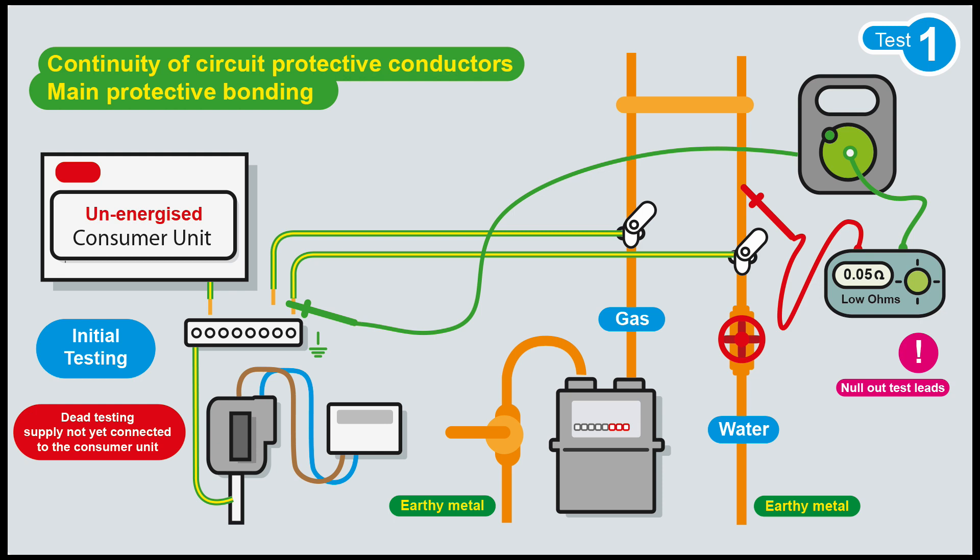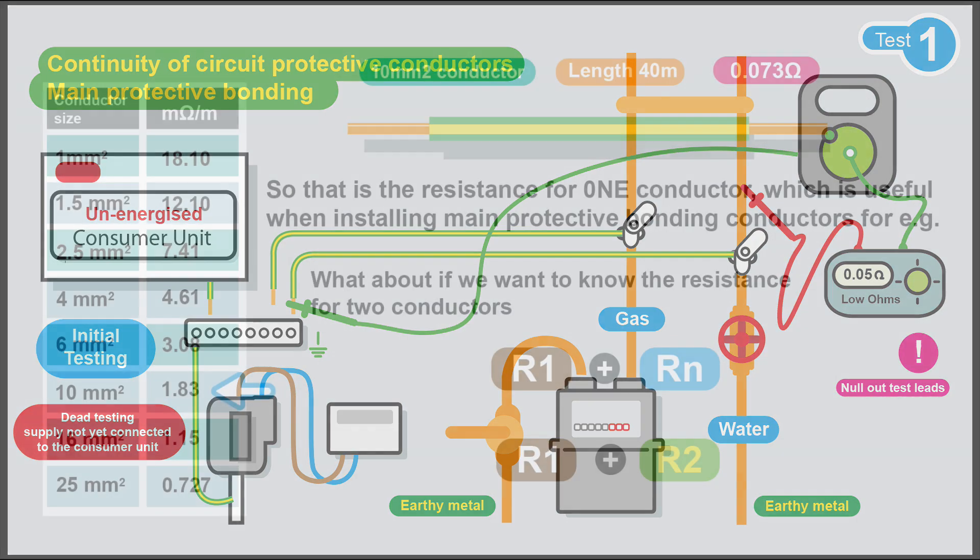For our main bonding conductors, we might have to consider going to a larger size. We'll do this later, but you can actually transpose the formula and work out from 0.05 ohms how many meters that is. I'll tell you it's 27.32 meters, but we'll do that in a bit.